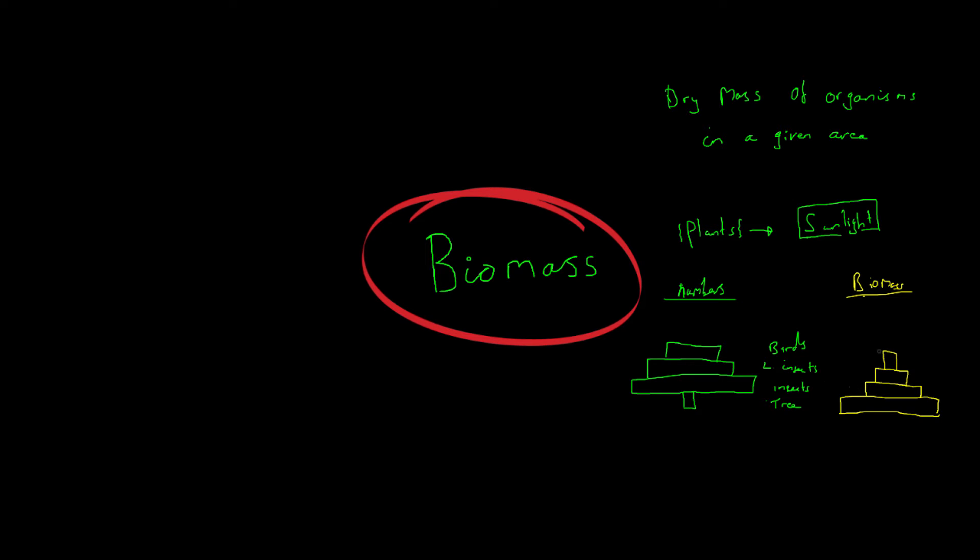And so you can see you actually do get a pyramid here with your biomass. Whereas with your numbers, it can vary. And you're not getting an ideal representation of your data. What this pyramid of biomass is basically showing you is that energy can never be created. It's always being lost. And so what is actually happening to that energy?